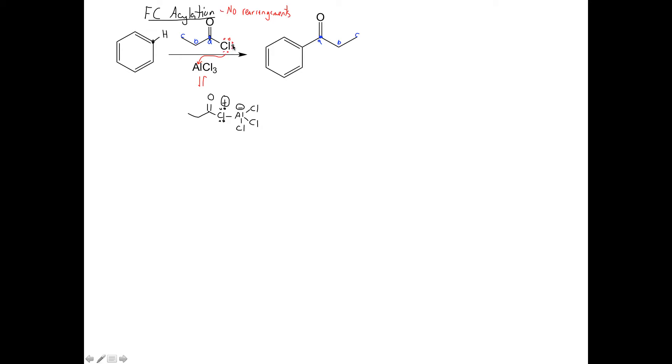So by making a bond, this lone pair has become a bond here. Chlorine only has six valence electrons around it, therefore a plus. Aluminum now has four and only wants three, so that has a negative charge.